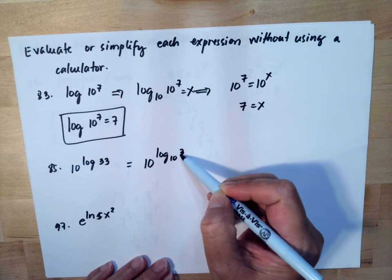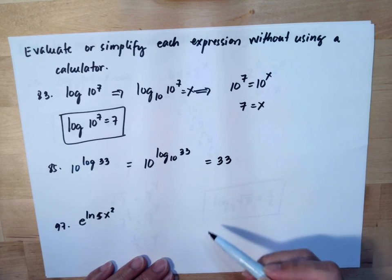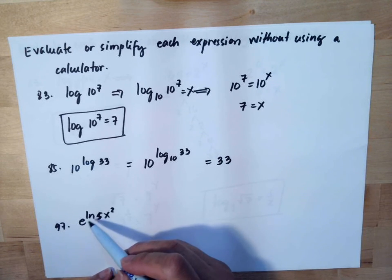And here, as we remember our properties, this will be 10 to the log base 10 of 33, so this will equal 33.